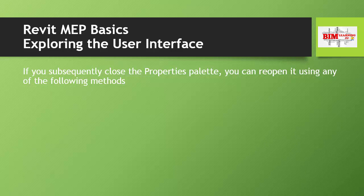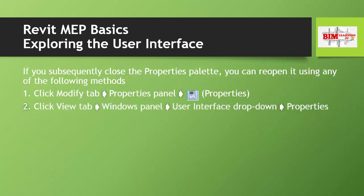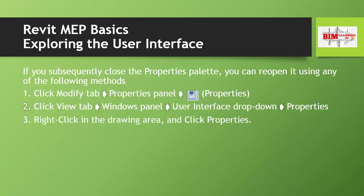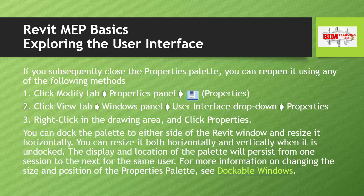If you subsequently close the Properties Palette, you can reopen it using any of the following methods: click the Modify tab, then Properties panel, and click on the Properties tab; or click the View tab, then Windows panel, then click User Interface, which drops down and shows you the option to tick Properties. You can also right-click in the drawing area and click Properties.